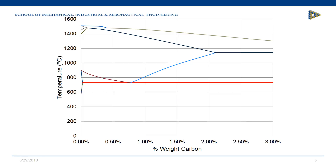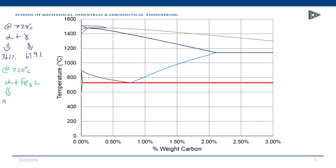So we now know that at 728 degrees we've got ferrite and austenite, with weight percentages of 36.1% and 63.9% respectively. And when we go through the transformation and get to a temperature of around 720 degrees C, we now have ferrite and cementite as our two phases, with weight percentages of 92.78% and 7.22%.